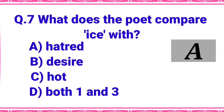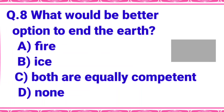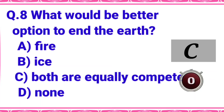Ice is compared with - the right answer is option A - hatred. What would be the better option to end the earth according to the poet? Option A: fire, B: ice, C: both are equally competent, or D: none. The right answer is option C - both are equally competent. Fire and ice both are equally competent and better options to end the earth - dono hi equally sufficient hain.